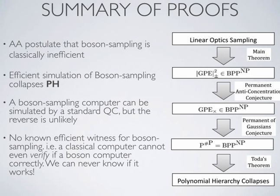Here's a quick summary of the proofs. Aaronson and Arkhipov postulate that boson sampling is a classically inefficient algorithm using complexity-theoretic results, and specifically they show that boson sampling can only be efficiently classically simulated if the polynomial hierarchy collapses. The polynomial hierarchy is a concept in computer science similar to P and NP — a generalization of those complexity classes. Nobody has proven that the polynomial hierarchy does or doesn't collapse, but we're pretty sure it doesn't, so for that reason we're pretty sure boson sampling is a hard problem.